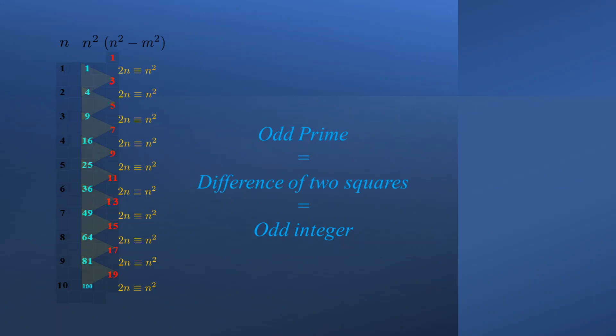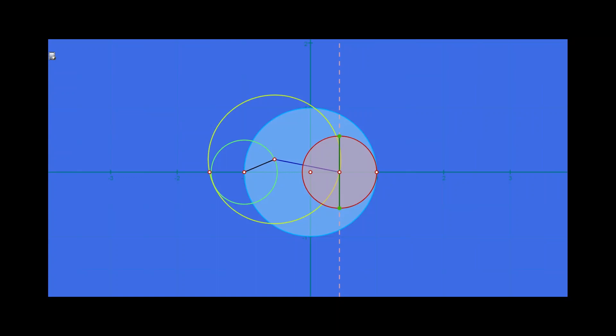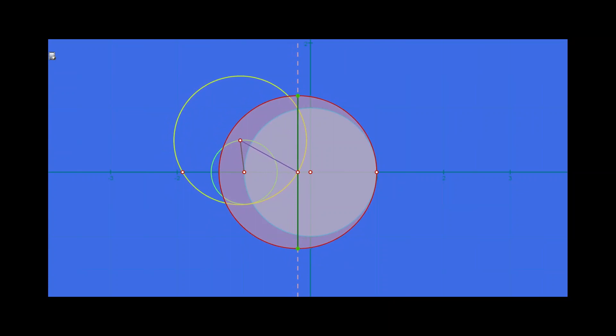So let's start again with trying to prove the near prime conjecture. This time, let's recast it in the equivalent language of Quik. The Quikian near prime conjecture asks: are there infinitely many primes p such that p minus 1 is a perfect square? Or alternatively, are there infinitely many primes of the form n squared plus 1, which is equivalent to 2n plus 1, where n is any integer? Let's review some of the conceptual uneasiness we had when we solved this problem the first time. We say odds and primes are equivalent because both are differences of two perfect squares. And this is undoubtedly true. But is it? How could it possibly be?